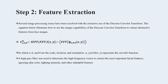Step two: feature extraction. Several image processing issues have been resolved with the extensive use of the discrete curvelet transform. By applying the fast Fourier transform on the image and then a half high-pass filter, we determine the high-frequency factor to extract the most important facial features. Finally, the inverse fast Fourier transform is applied.